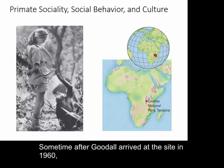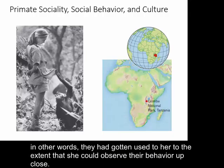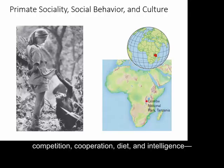Sometime after Goodall arrived at the site in 1960, the chimpanzees had become habituated — in other words, they had gotten used to her to the extent that she could observe their behavior up close. She made some of the first observations of chimpanzees' social organization, competition, cooperation, diet, and intelligence — many of the topics we will cover in this lecture.